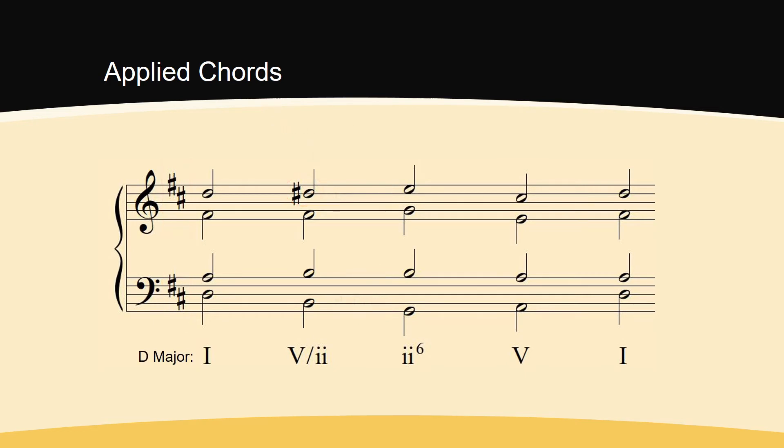Its root, B, descends by 5th to the root of the 2 chord, E. This is an example of an applied dominant harmony. We would analyze this chord as the 5 of the 2 chord. We can notate this as a Roman numeral two different ways. First, it is common to analyze this chord with a forward slash, such as V/ii, and we would say 5 of 2. It is also common, and sometimes much neater, to simply use a curved arrow, showing the circle of fifths root motion from the applied chord to the chord it is embellishing.